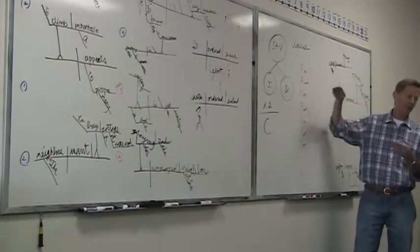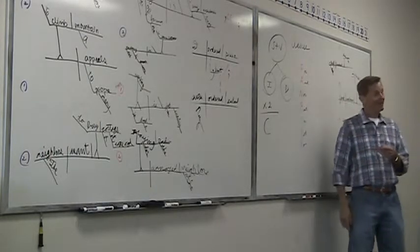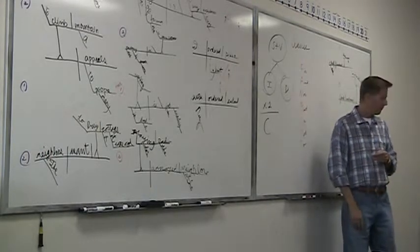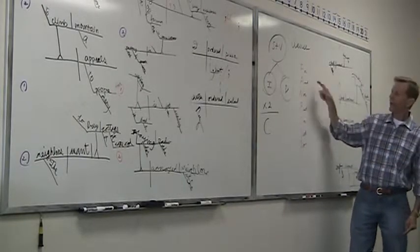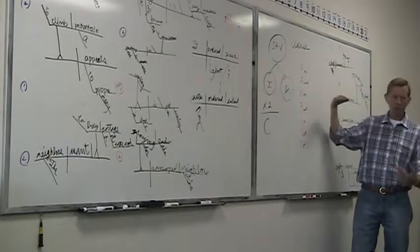That's why they're called coordinating conjunctions, because the relationship is one of equality. For, what does for express? I got an A for I had studied really hard. What's the relationship there? Because. So, I'm establishing a relationship of cause and effect. For, actually, it's effect and cause.